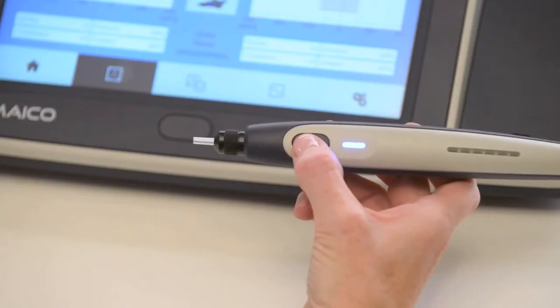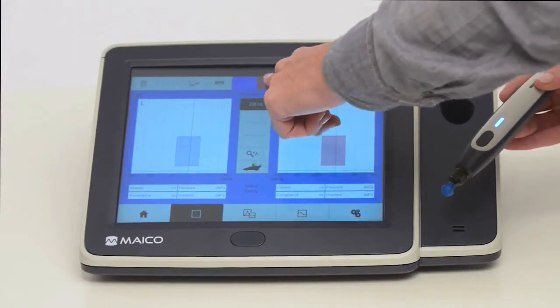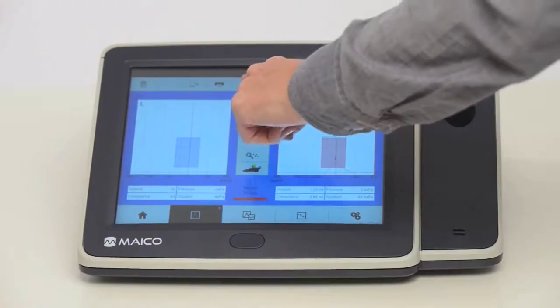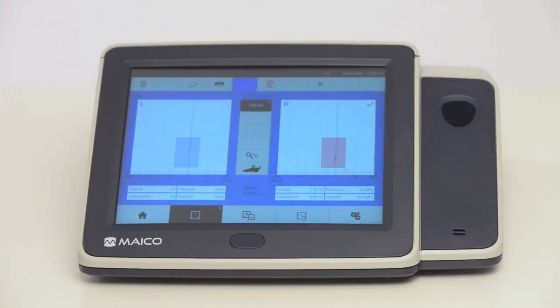Select right or left ear by pressing the button on the probe or on the screen. Red light indicates right ear, blue indicates left ear. Or select ear using the touch screen.